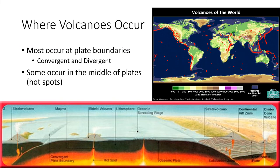When a tsunami reaches shallow coastal waters, it can't continue its circular rolling motion downward, so it surges upward and crashes as a massive, destructive wave. Tsunamis can travel across entire ocean basins — for example, an earthquake off Japan can generate a tsunami that reaches Hawaii and then California, though it diminishes in energy with distance. The 2011 earthquake that led to the Fukushima Daiichi nuclear accident is a notable example.